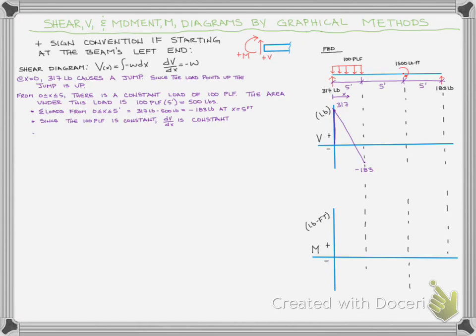Getting that triangular shape that's positive from zero to where we cross zero is important, and we need that x distance. We're decreasing by 100 pounds per every foot we go over. So we can write the expression 317 minus 100 times x, set that equal to zero, solve for x, and that turns out to be 3.17 feet. We'll be able to use that later when we're finding our max moment and drawing our moment diagram.